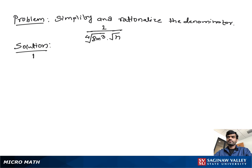Simplify and rationalize the denominator: 1 over the fourth root of 8m³ times the square root of n. We can simplify and write this as 1 over the fourth root of 2 times 2 times m times m times m, times the square root of n.